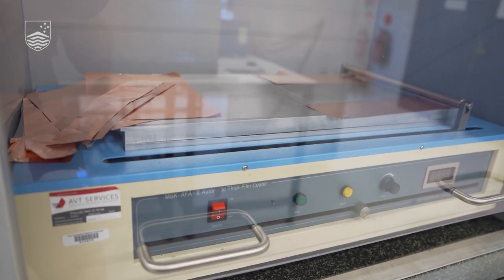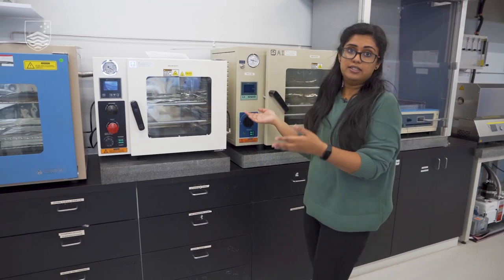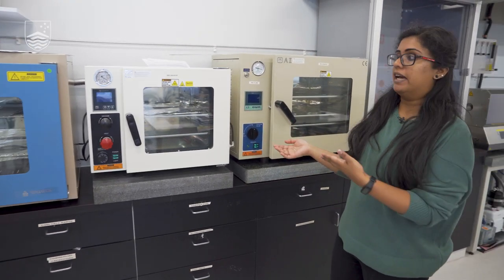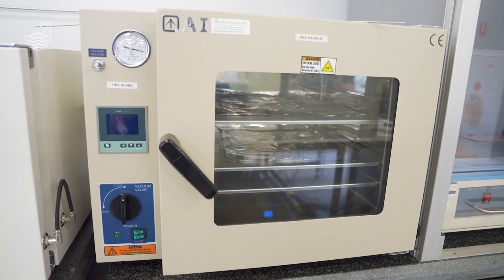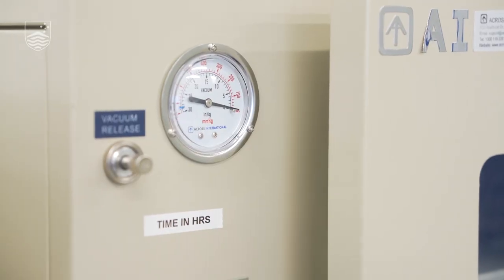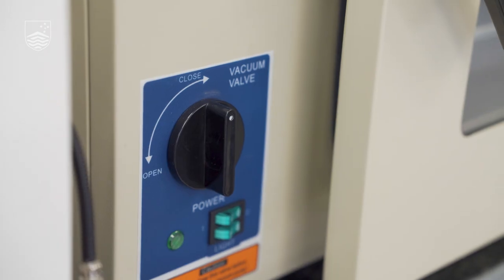These three are ovens that we can use, vacuum ovens, so you can just keep it in vacuum and use it for heating or preserving your electrodes or any other materials that you synthesize or your glassware.